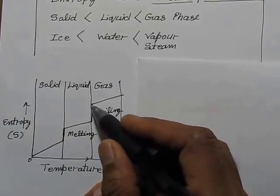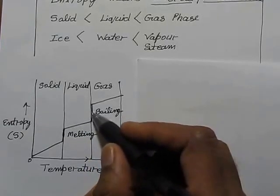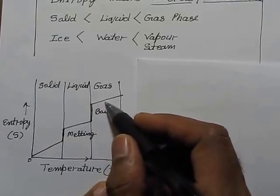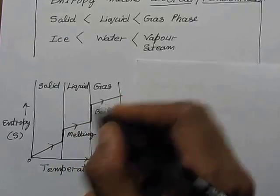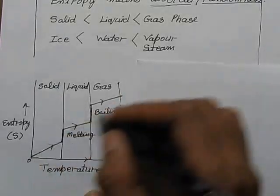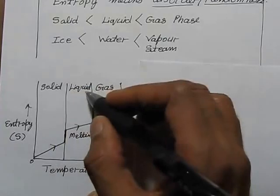Then if you keep increasing the temperature, at a certain temperature (for water 100 degrees Celsius) it will start boiling. So the change in entropy is increasing. You can see from left to right we are going from solid to liquid and liquid to gas, so entropy is increasing.